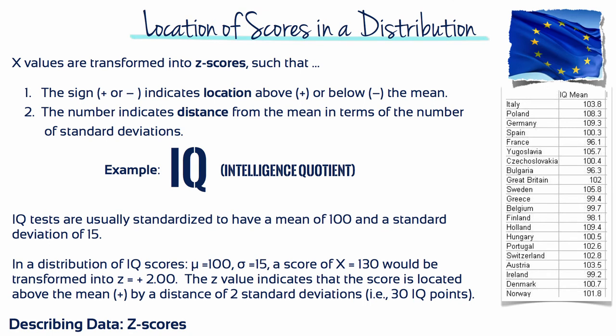Z-scores transform each x-value into a signed number. The sign of a z-score tells you immediately whether the score is located above or below the mean, while the numerical value tells you the number of standard deviations from the mean.